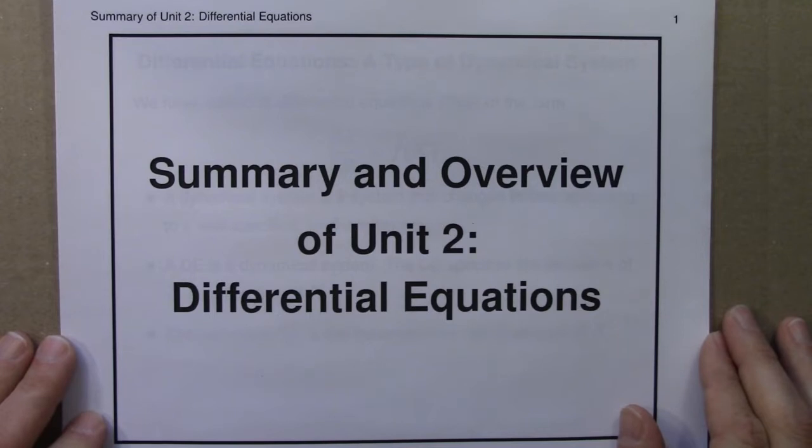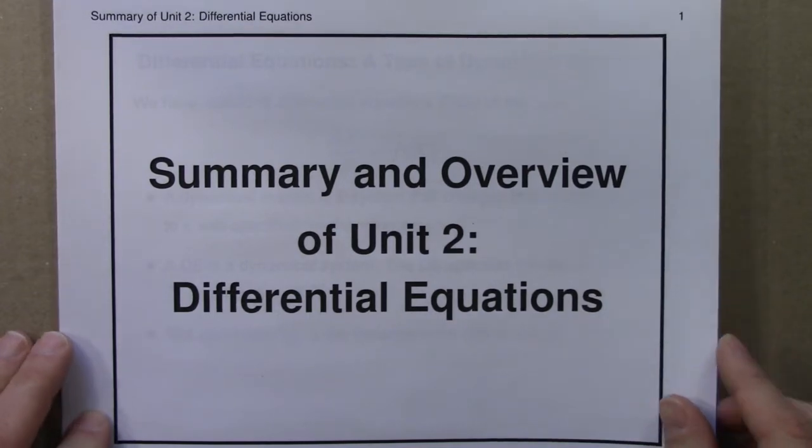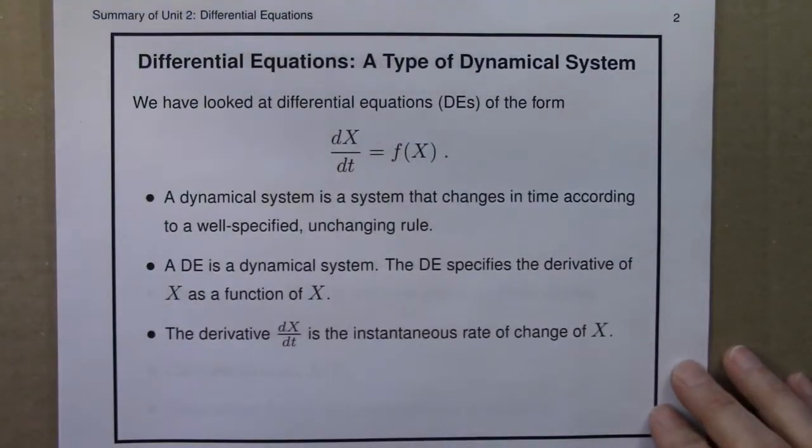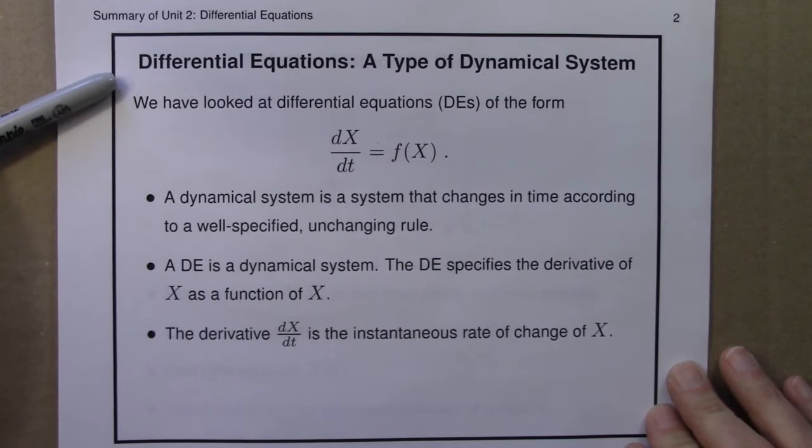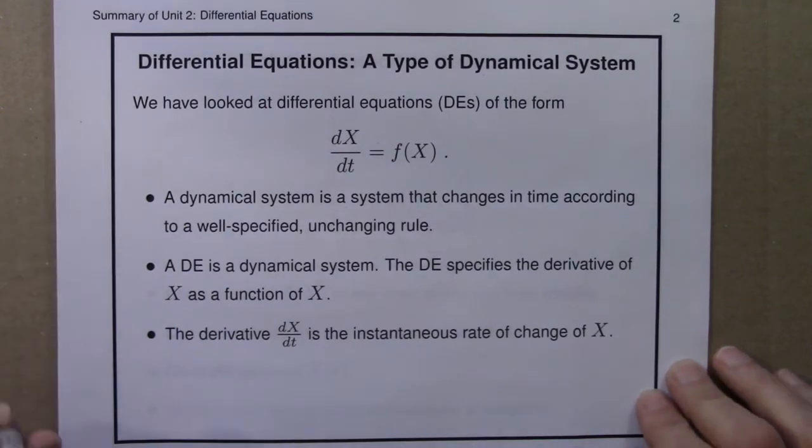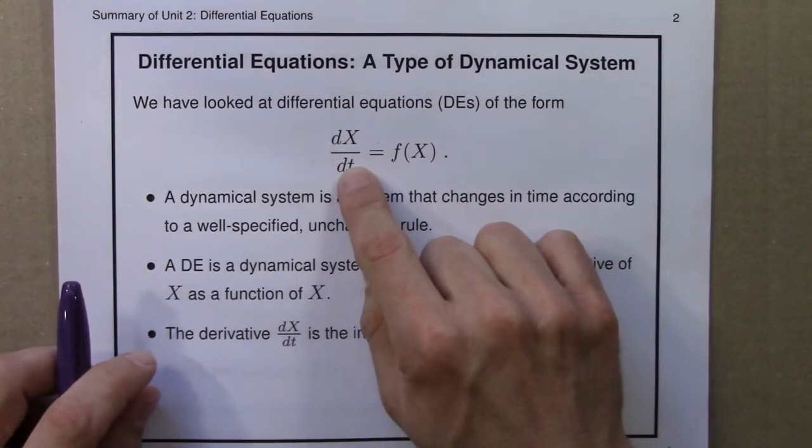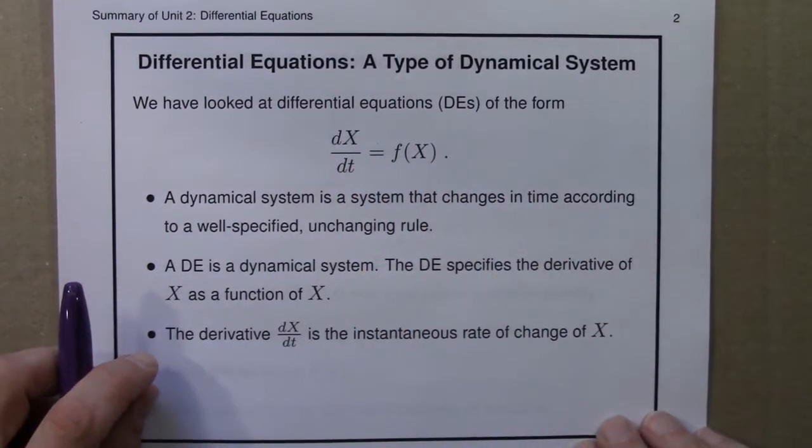Let's summarize and review the key results and ideas from Unit 2 on differential equations. A differential equation is a type of dynamical system, and we've looked at differential equations of this form. Again, the derivative of some variable is just a function of that variable.